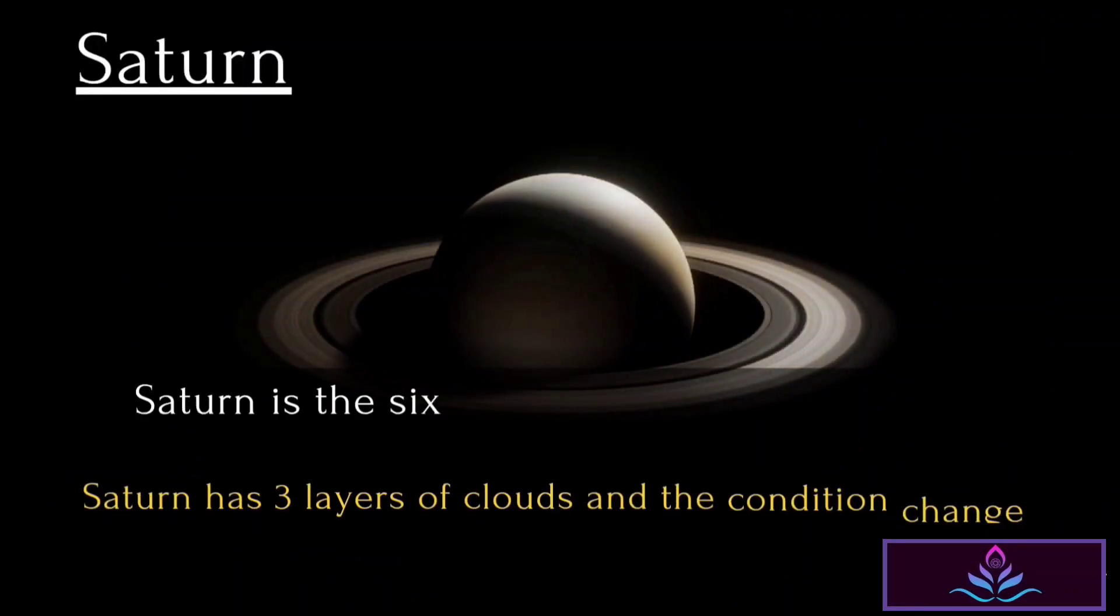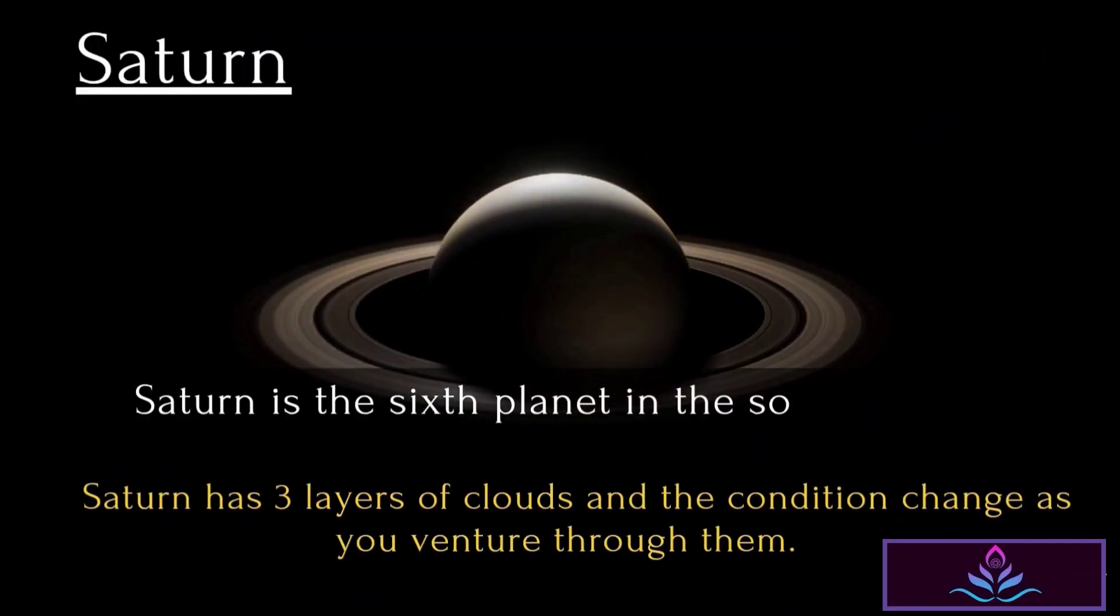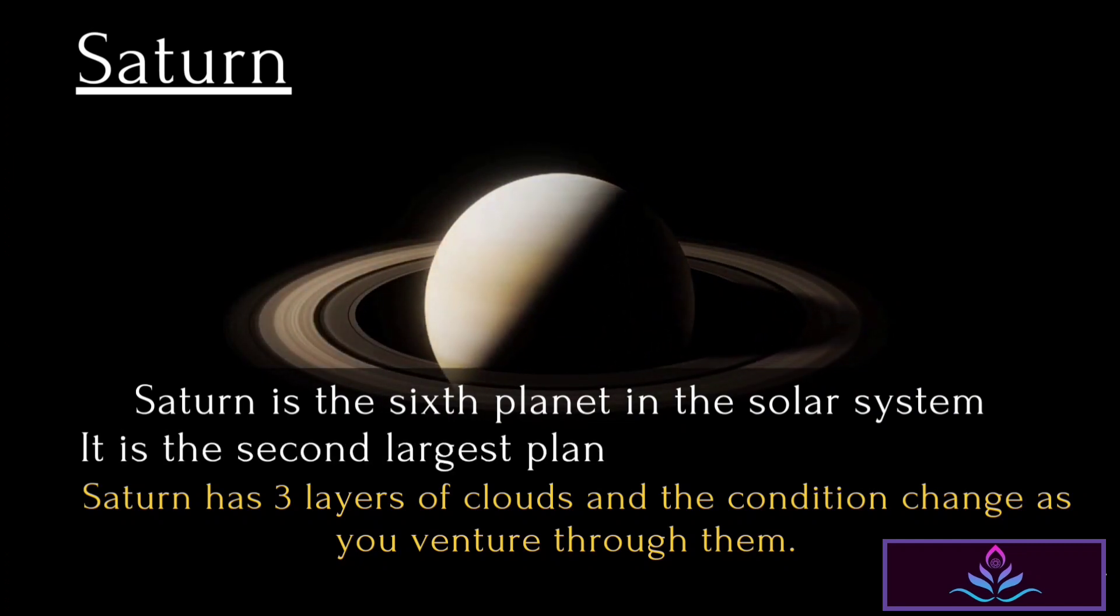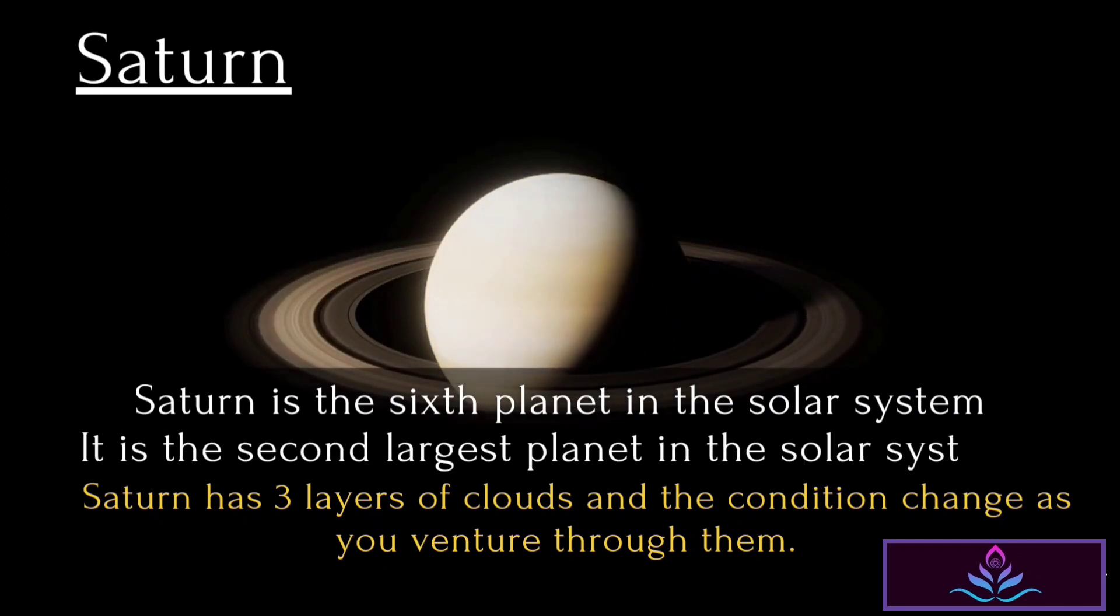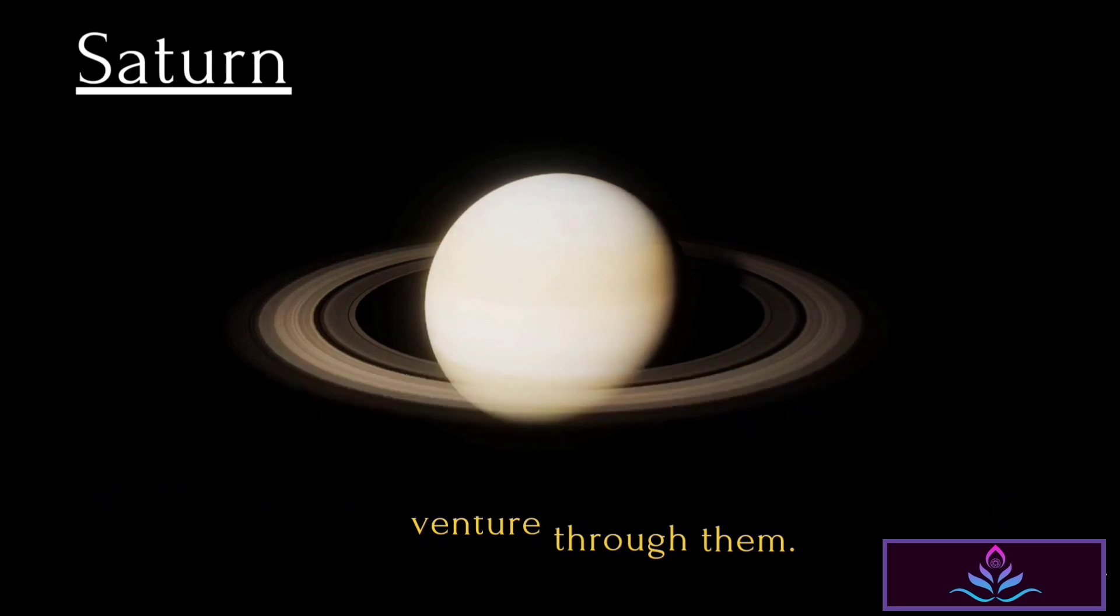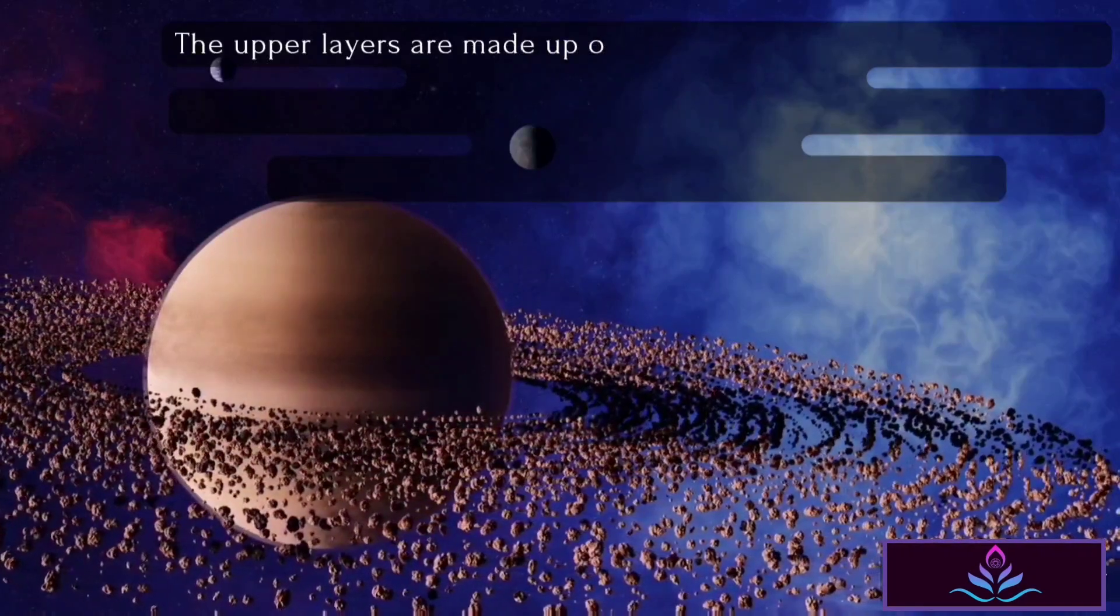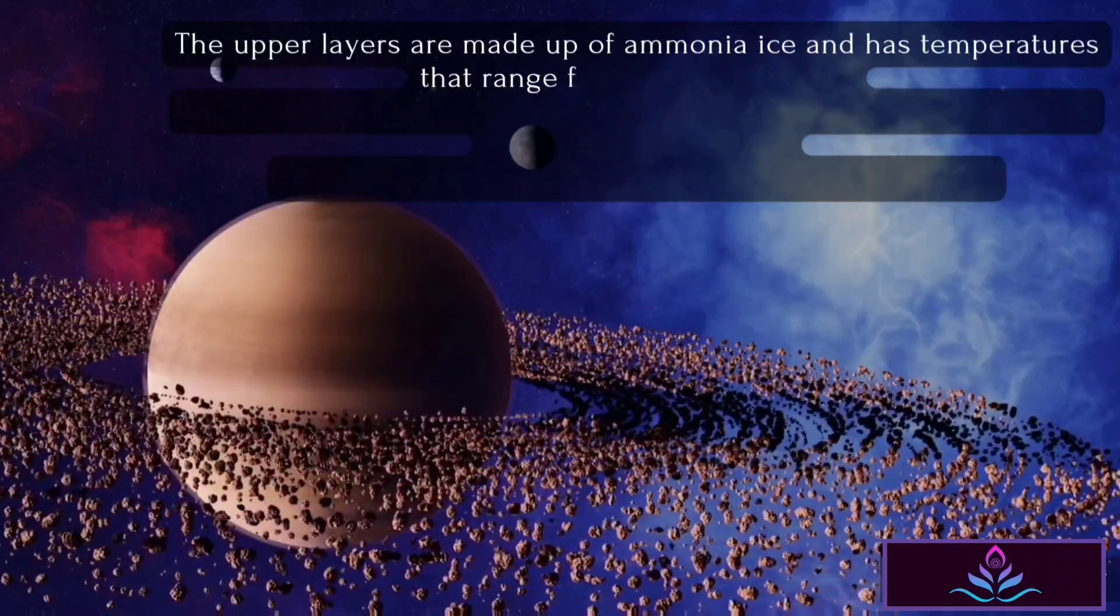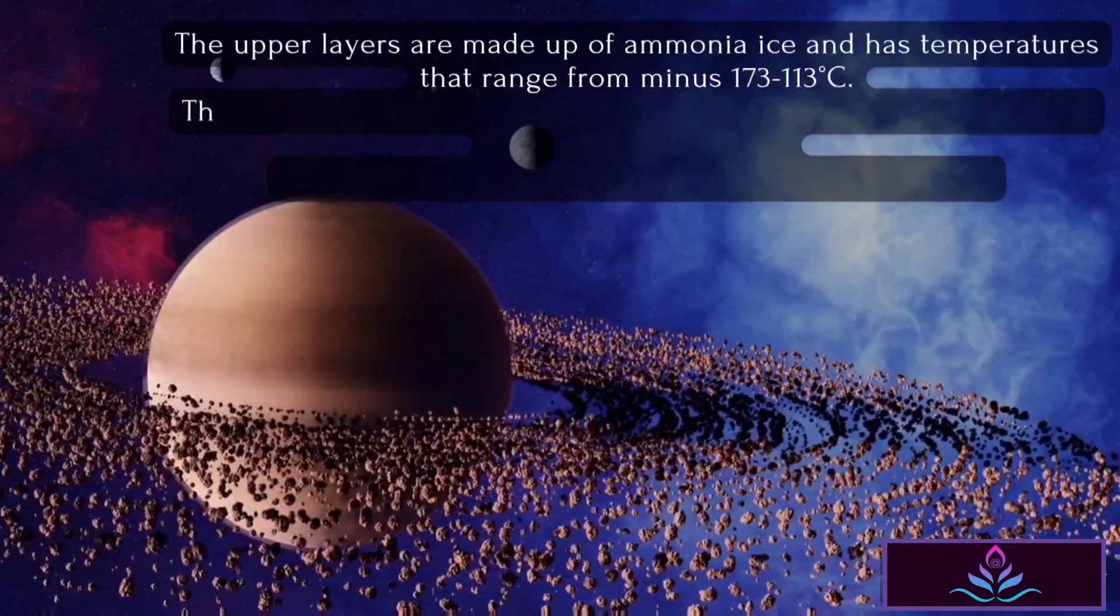Saturn is the sixth planet in the solar system. It is the second largest planet in the solar system. Saturn has three layers of clouds, and the conditions change as you venture through them. The upper layers are made up of ammonia ice and have temperatures that range from minus 173 to 113 degrees Celsius.